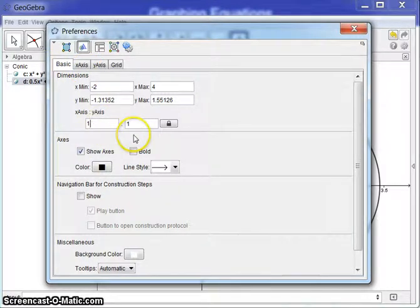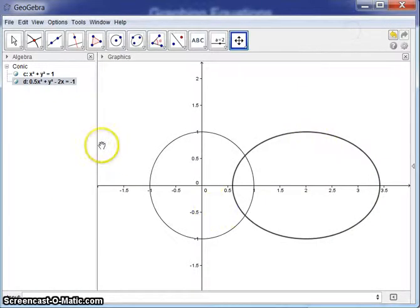And hopefully that will encompass the whole thing. And again, we'll change the ratio to one to one, so our circle looks like a circle. And there we have it.